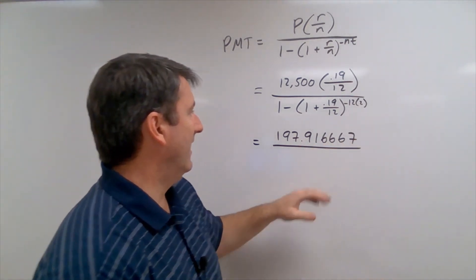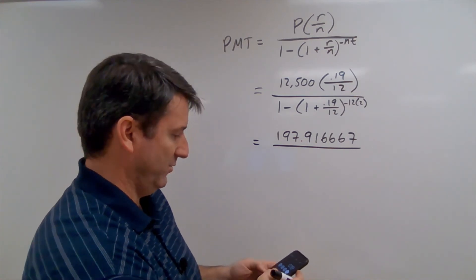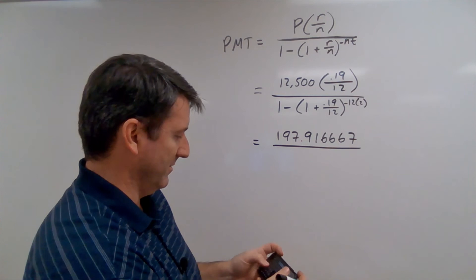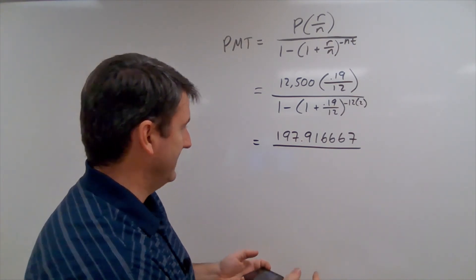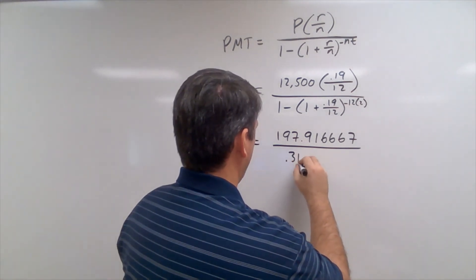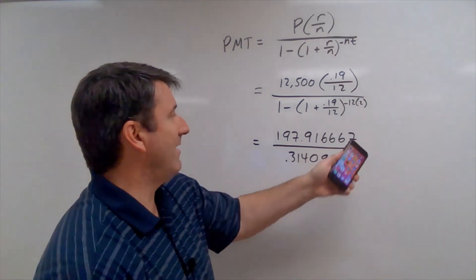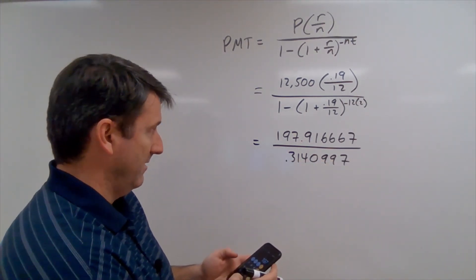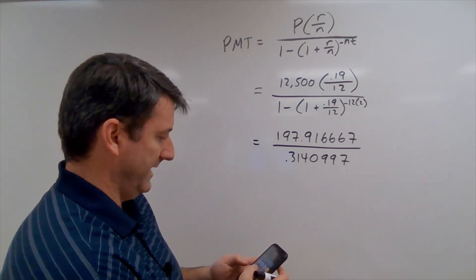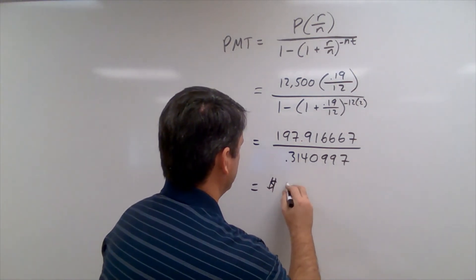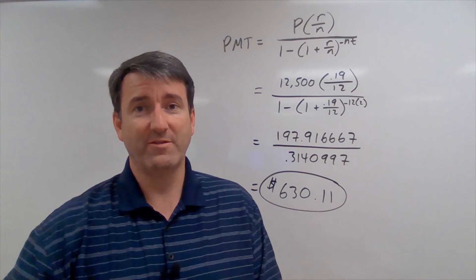So I've carried it out to quite a few decimal places. This is just six repeating, and I've gone ahead and carried this out to six decimal places here. Down below, we're going to take 0.19 divided by 12. We're going to add 1, and then take that number to the negative 24th power. And then we're going to subtract that from 1. And that's going to give us 0.3140997. So now if we divide this, we get 197.916667 divided by 0.3140997. This gives us a monthly payment of $630.11. That's how much it's going to take in order to pay this off in two years.